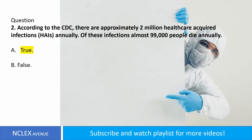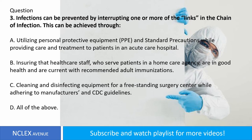Question number three. Infections can be prevented by interrupting one or more of the links in the chain of infection. This can be achieved through: A. Utilizing personal protective equipment (PPE) and standard precautions while providing care and treatment to patients in an acute care hospital. B. Ensuring that healthcare staff who serve patients in a home care agency are in good health and are current with recommended adult immunizations. C. Cleaning and disinfecting equipment for a free-standing surgery center while adhering to manufacturers and CDC guidelines. D. All of the above. Answer: letter D. All of the above.